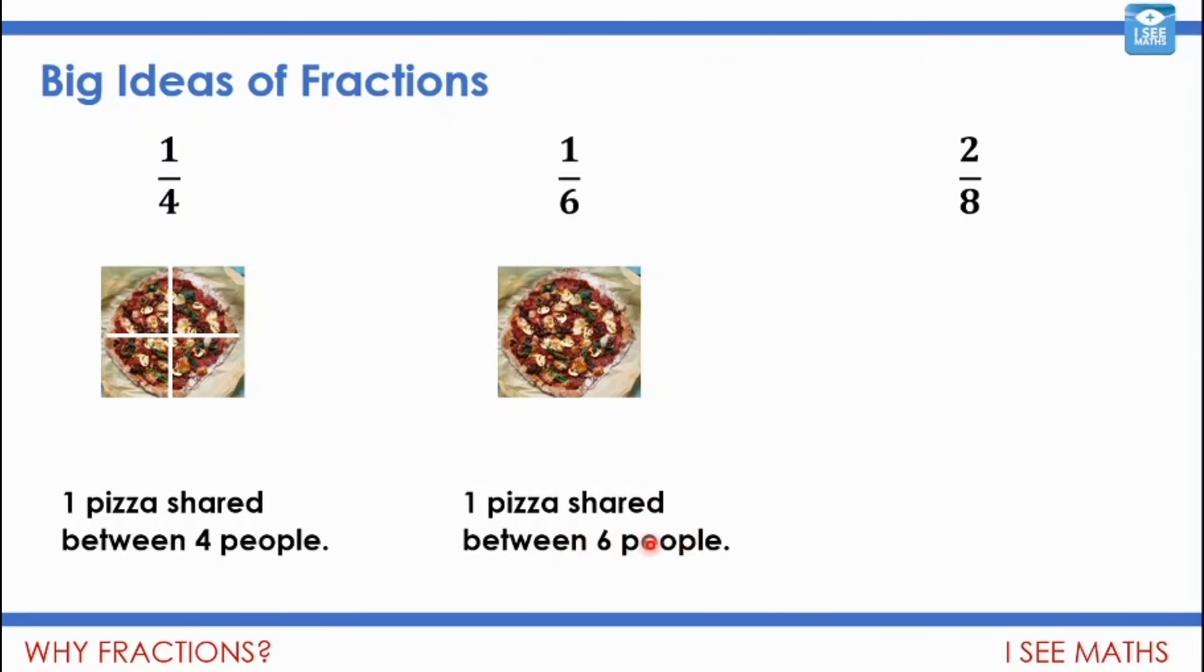Because this pizza is going to be split into more pieces. So the sixth is the number of pieces it's split into. And so a sixth is actually going to be less than a quarter. Let's see. Can you see that each sixth is less than each quarter?